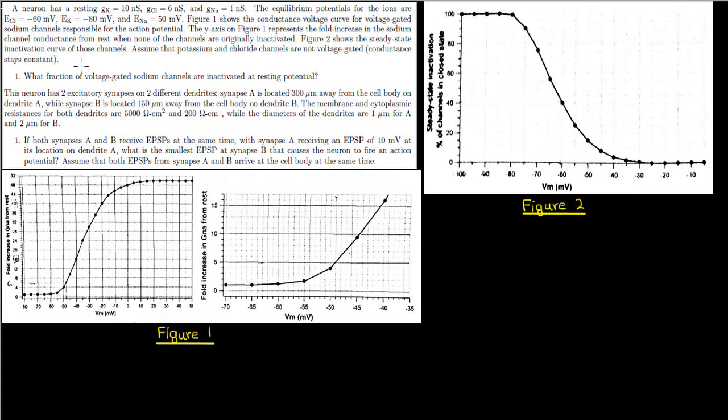In this video we're going to be doing another electrophysiology problem, but this time it's going to be about thresholds and length constants. We have a neuron with a potassium channel conductance of 10 nanosiemens, a chloride channel conductance of 6 nanosiemens, and a sodium channel conductance of 1 nanosiemens when the cell is at rest.